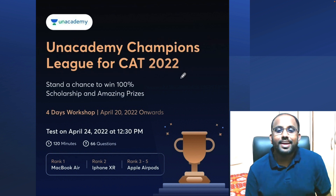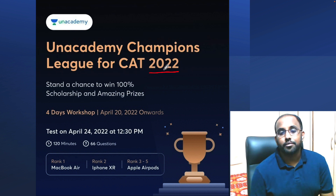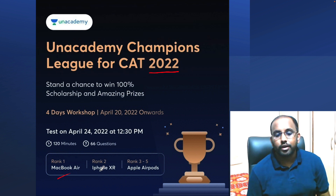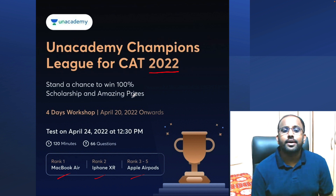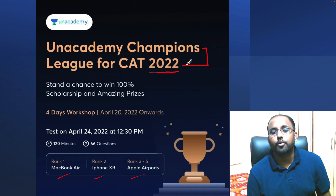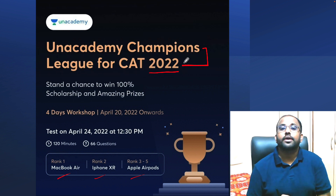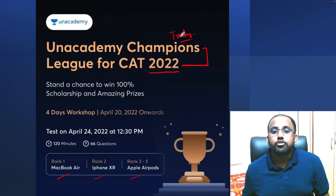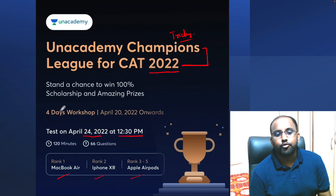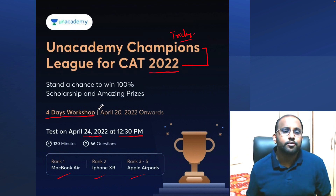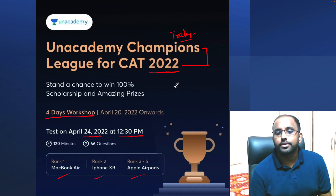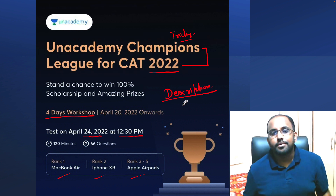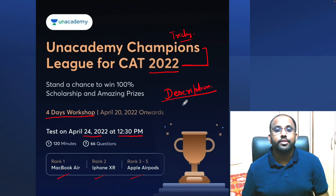Here is the Unacademy Champions League for CAT 2022 — it's back after a successful run in CAT 2021, where many students won MacBook Air, iPhone, and Apple AirPods. It's important to give these tests to evaluate your skills and check you're moving in the right direction. The test is on 24th April at 12:30 PM, with a four-day workshop beforehand to brush up concepts in Quant, DI, and Verbal. Enrollment links are in the description.